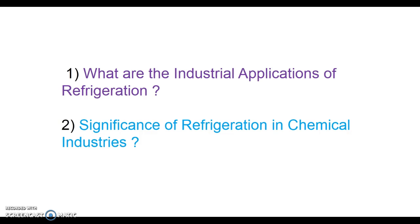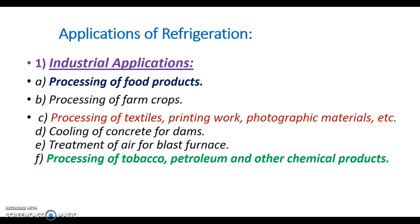Now let us understand the industrial applications of refrigeration, and also the significance of refrigeration process in chemical industries. Refrigeration is used for processing of food products, for processing of farm crops to maintain their temperature lower than that of the atmospheric temperature, processing of textiles, printing work, photographic materials, cooling of concrete heat while constructing dams, treatment of air for blast furnace, and also processing of tobacco, petroleum and other chemical products.